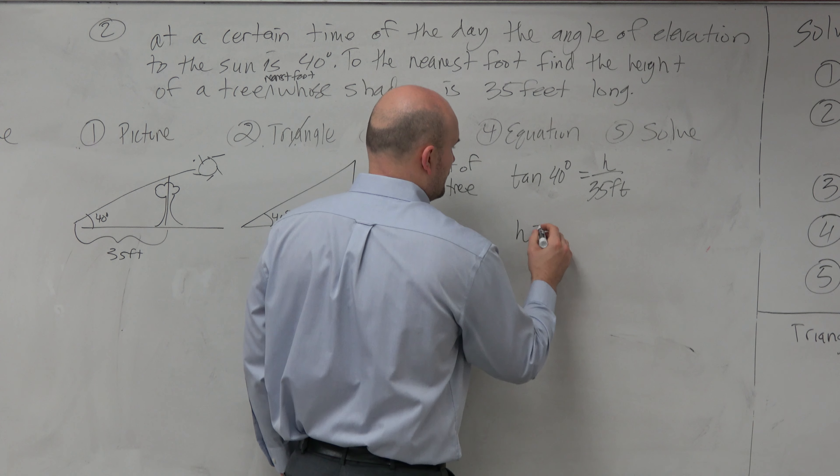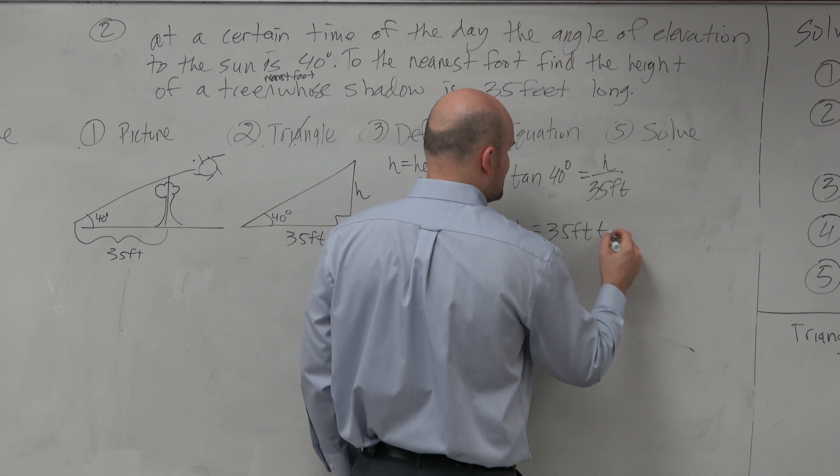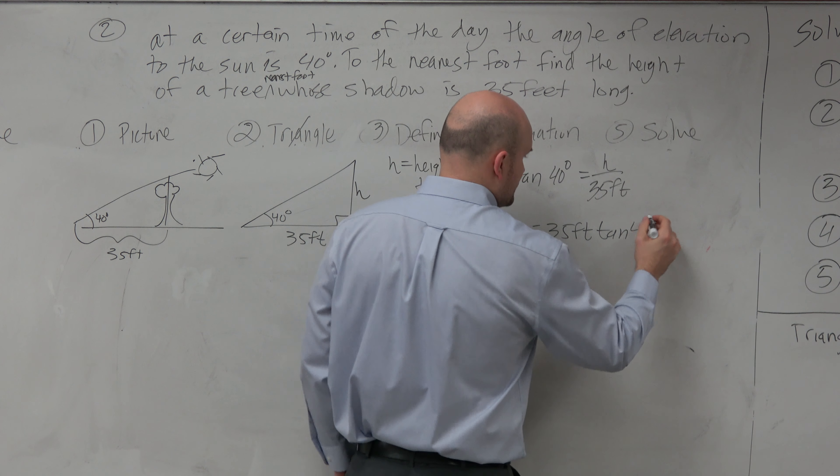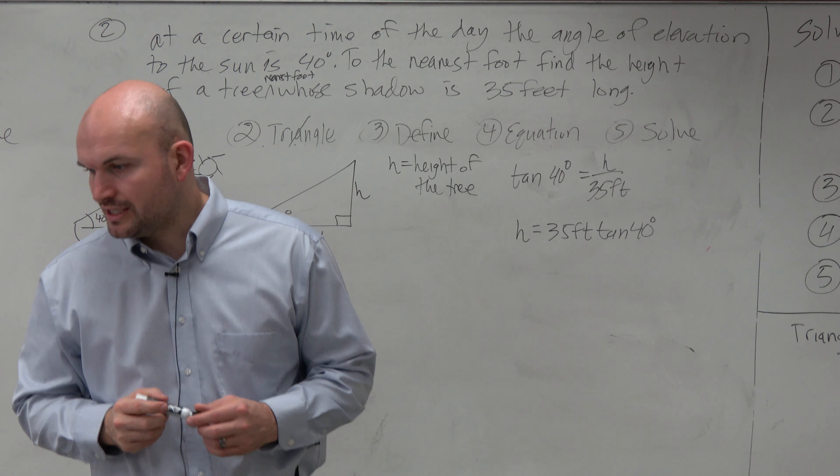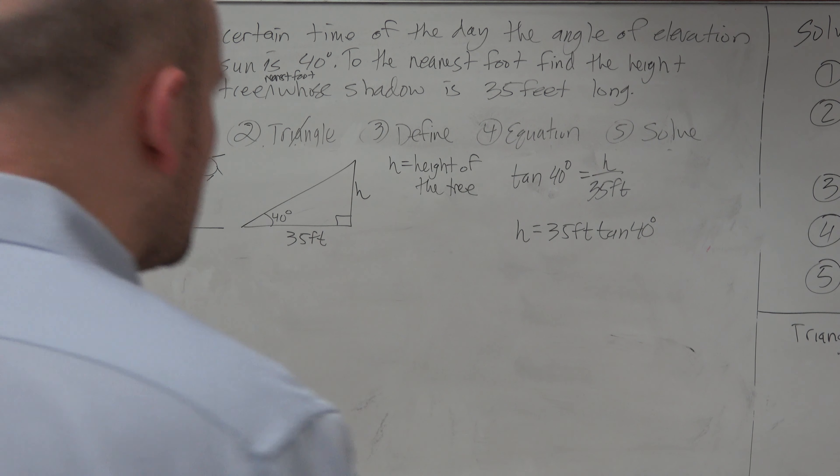But if I wanted to write another equation, I could do 35 feet times the tangent of 40 degrees. Again, making sure that my calculator is in degree mode, you're simply just going to go ahead and type that into your calculator.